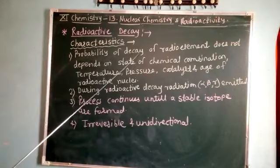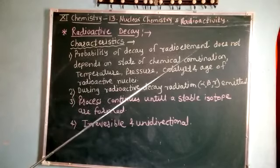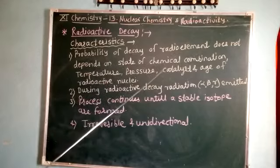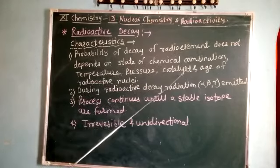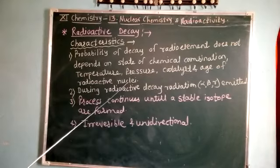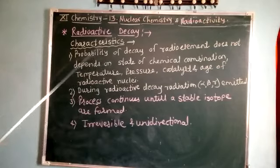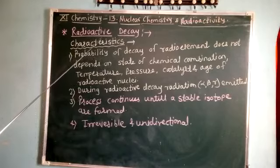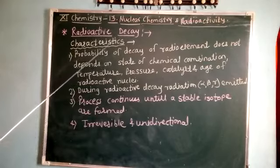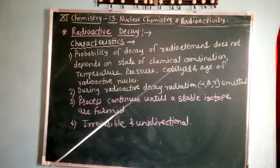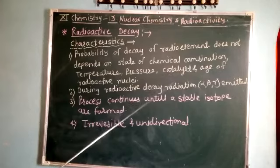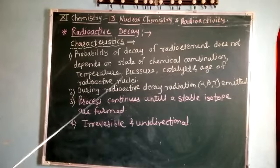The characteristics of this process are: the probability of decay of a radioactive element does not depend on the state of chemical combination, temperature, pressure, catalyst, or age of the radioactive nuclei. This means radioactive decay is a random process, carried out at normal temperature and pressure, and does not depend upon catalyst or age of the radioactive nucleus.